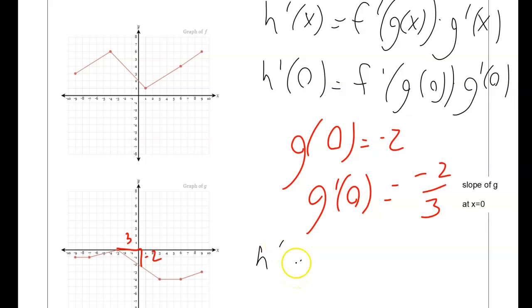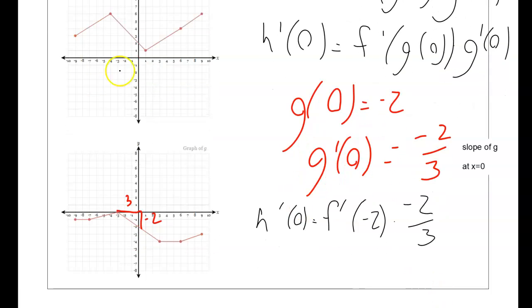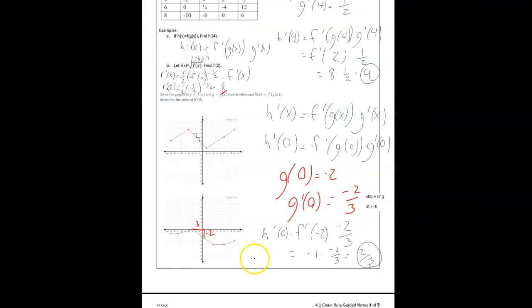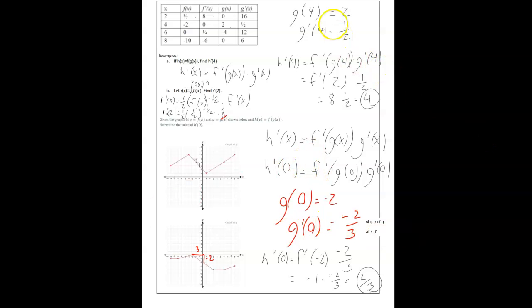I'm going to start to plug things in. h prime of 0 equals f prime of negative 2 times negative 2 over 3. Then I need f prime of negative 2, and that slope is pretty clearly negative 1, so negative 1 times negative 2 over 3 is going to be 2 over 3 as my final answer. Notice the rule is the same regardless of how I present the problems to you.